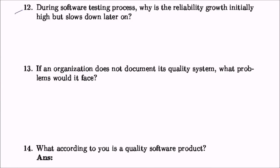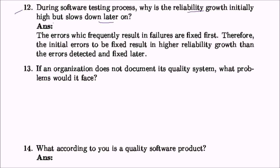During the software testing process, why is the reliability growth initially high but slows down later? The errors which frequently result in failure are fixed first — the most failure-causing errors are prioritized. Therefore, the initial errors fixed result in higher reliability growth. Afterwards, errors that produce less effect on the software are fixed, and some errors that will never be invoked are fixed last. That is why reliability growth is initially high but slows down.